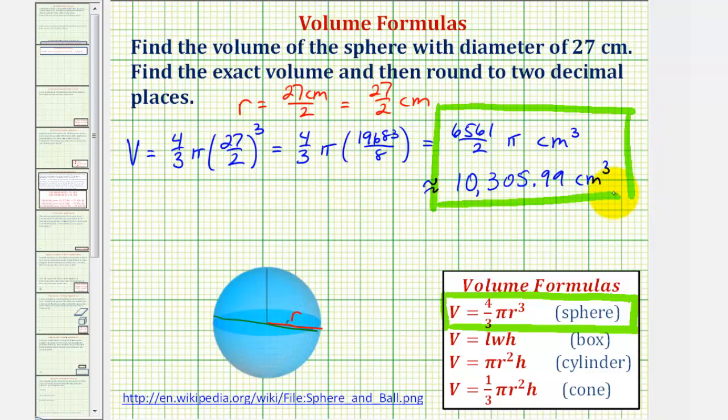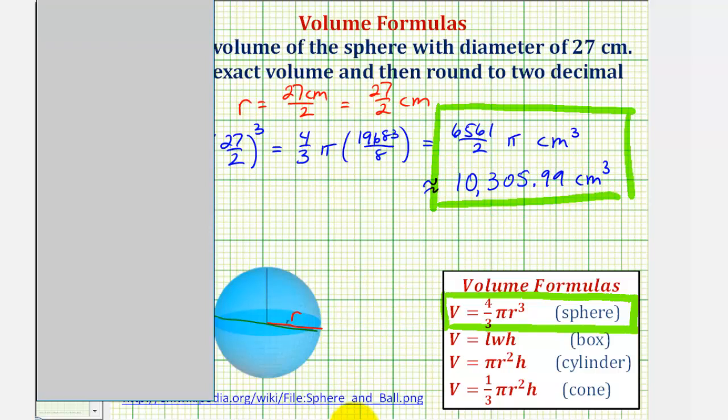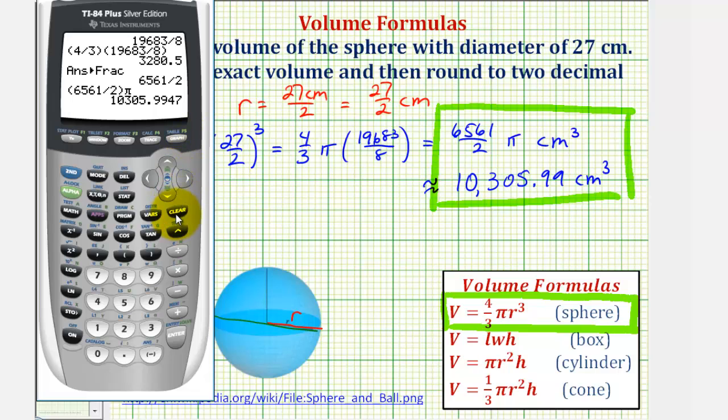I do want to show that if we use 3.14 for pi, it will change our decimal approximation. The reason for this is that when we use the pi key, we're using a much more accurate approximation of pi than 3.14. If we enter 6,561 divided by two times 3.14, notice how it would change our approximation by over five cubic centimeters.